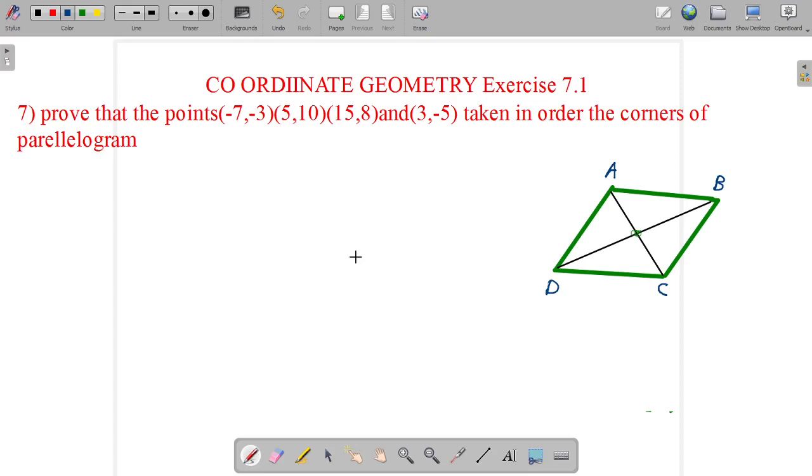Prove that the points (-7,-3), (5,10), (15,8), and (3,-5) taken in order are the corners of a parallelogram.